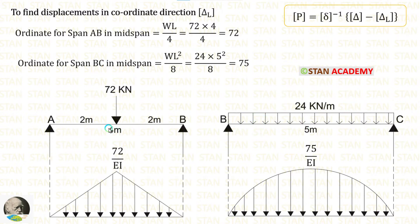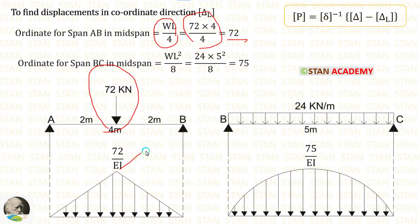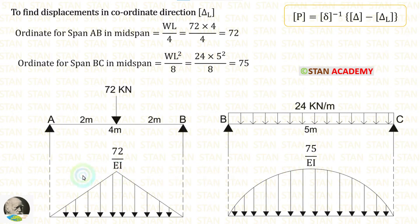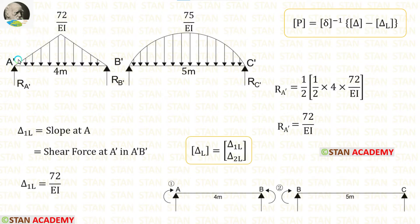In a simply supported beam, if a point load acts at the center, the formula for the maximum bending moment is WL/4. Using the formula we can calculate this ordinate. If UDL acts for the full span, the formula for maximum bending moment is WL²/8. We know that in the conjugate beam we have to divide the moment by EI. Let us name the conjugate beams as A'B' and B'C'. Inside the delta L matrix we have to find two values: delta 1L and delta 2L.